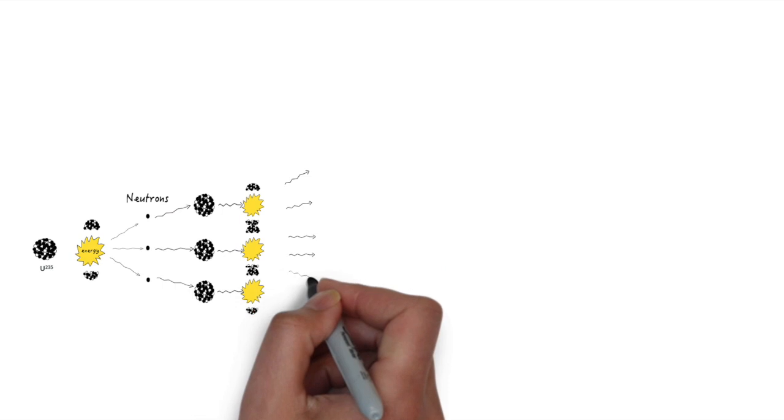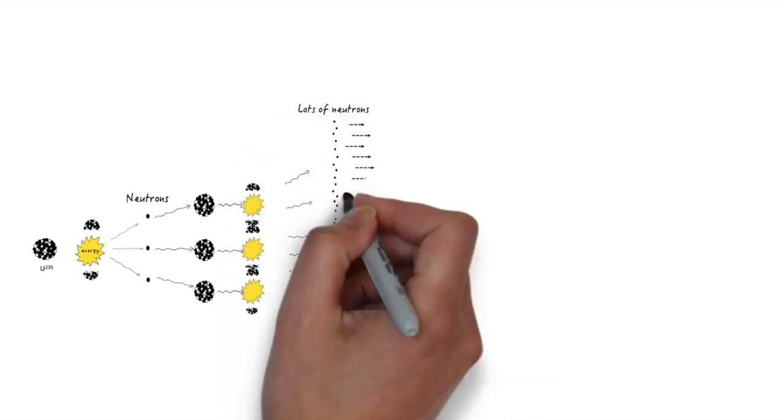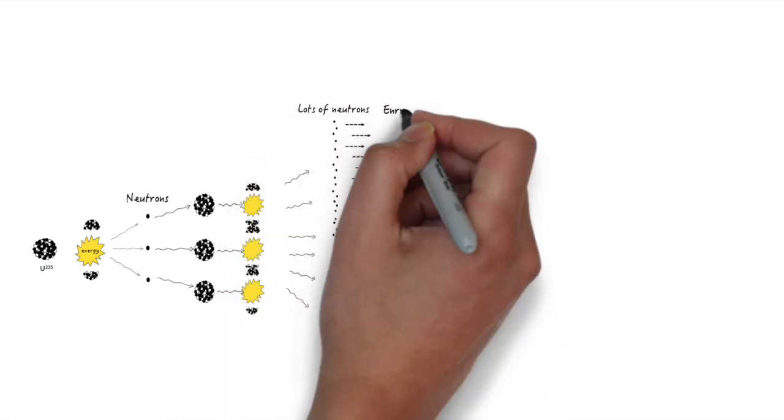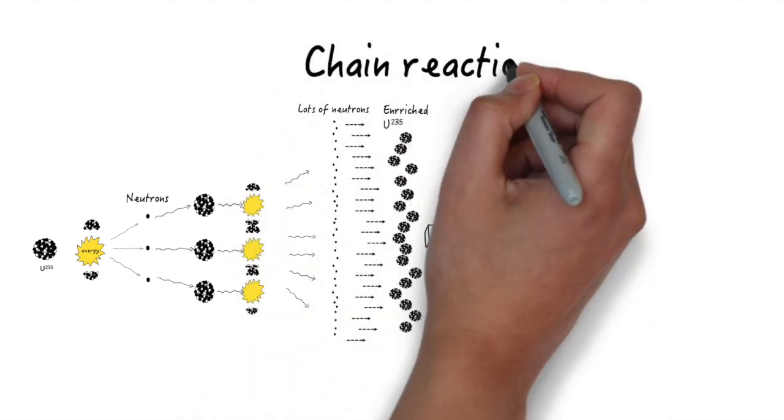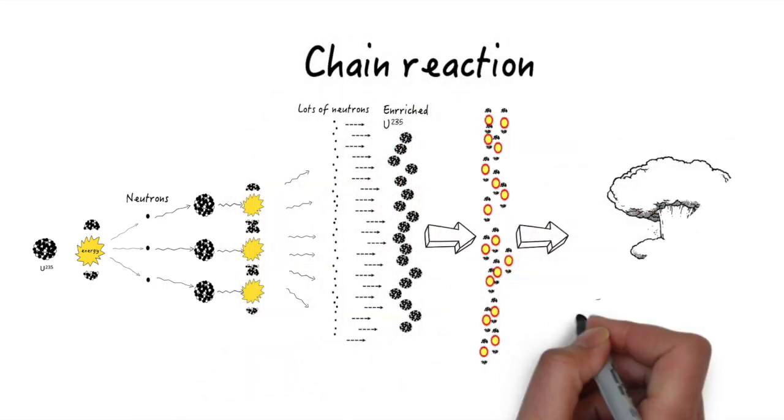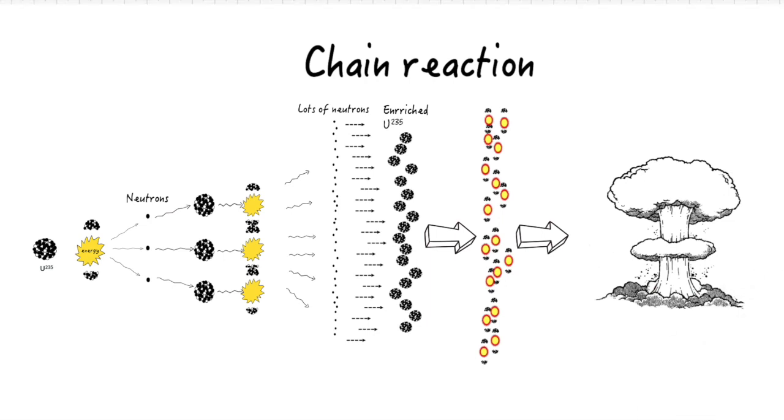Then, those neutrons hit several other uranium atoms and split them, losing large amounts of energy and more neutrons. Quickly, this reaction splits nearly all the neutrons, and soon enough you have an atomic bomb. That's how an atomic bomb works.